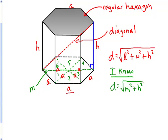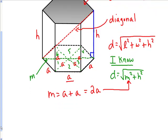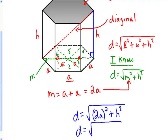So what is the length of m? m equals a plus a, which equals 2a. In terms of a and h, if I plug in 2a for m, I can figure out the length of the diagonal.